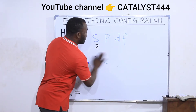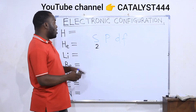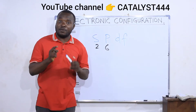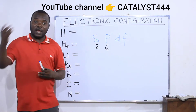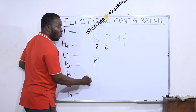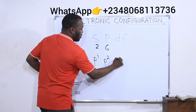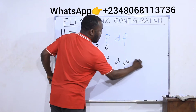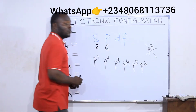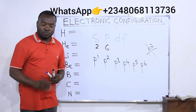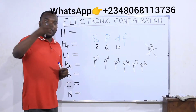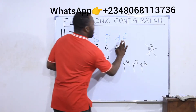The p orbital carries a maximum of six electrons, so p can carry one, two, three, four, five, or six, but not more than six. The d orbital carries a maximum of ten electrons — it can carry ten down to one. The f orbital carries a maximum of fourteen electrons.